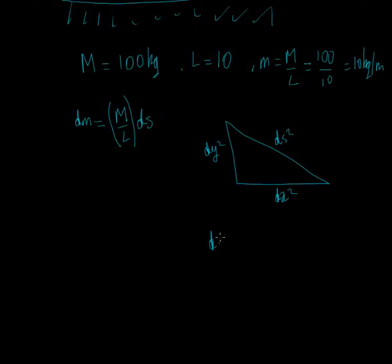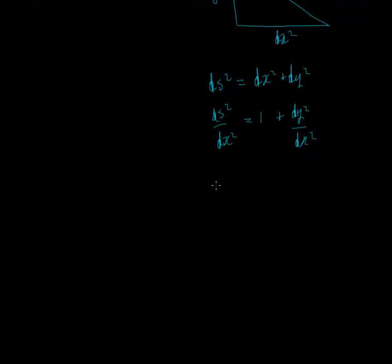We could say that ds squared equals dx squared plus dy squared. If we were to divide through this by dx squared, you can say that ds squared upon dx squared equals one plus dy squared upon dx squared. That could be written as ds upon dx equals the root of one plus y derivative of x squared.